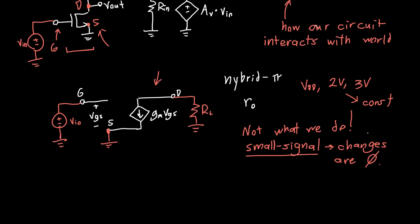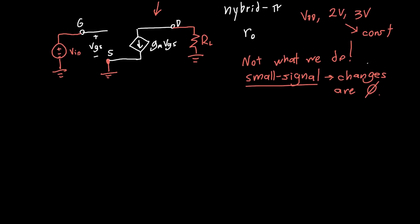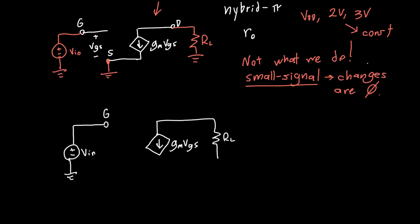If we redraw the small signal model more neatly, we see we've got our voltage source Vin connected to the gate, our gm*Vgs voltage-dependent current source, and RL. The source terminal is drawn long so we can easily spot Vgs. The drain terminal is also the Vout node.